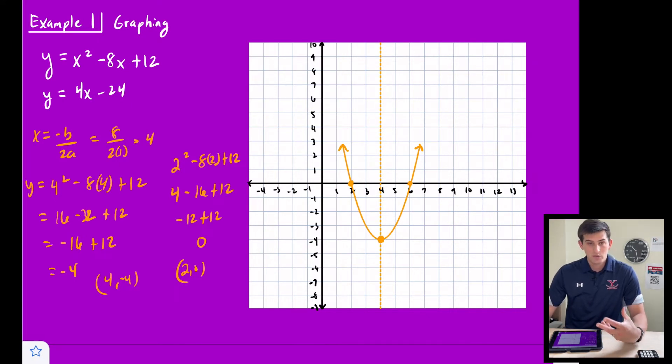Well, the x-intercept would be when y is equal to 0, right? So we could say 0 = 4x - 24, which would be 24 = 4x. So we would get x = 6. So we know x = 6, which is nice because we do have an intersection there.